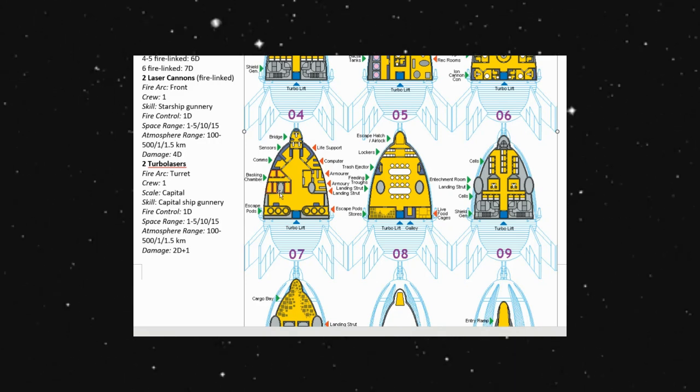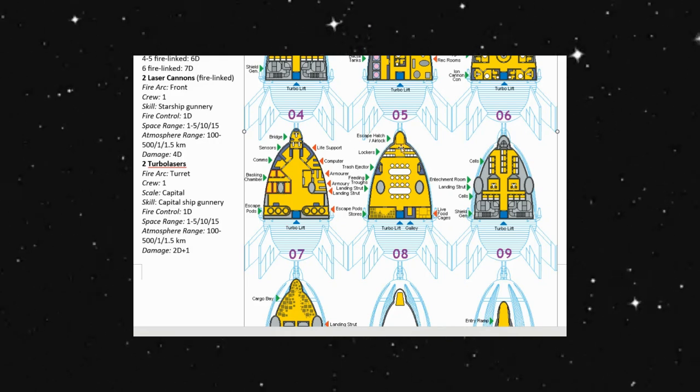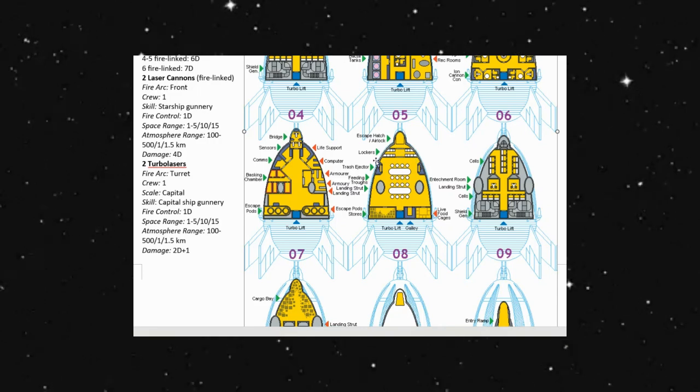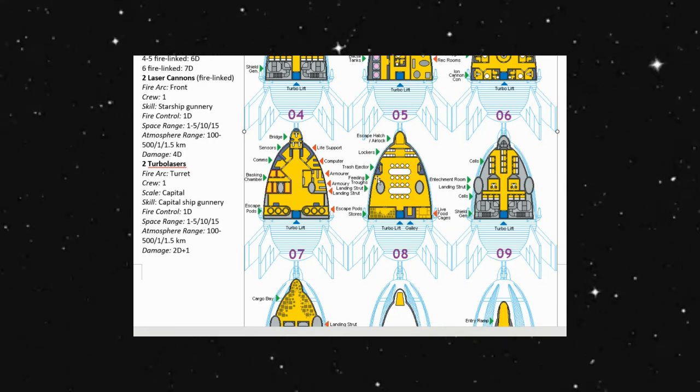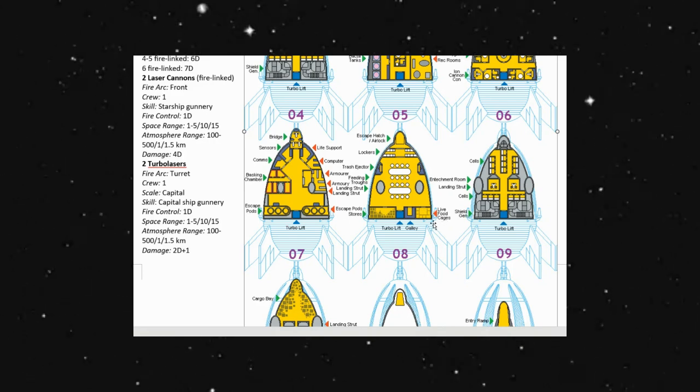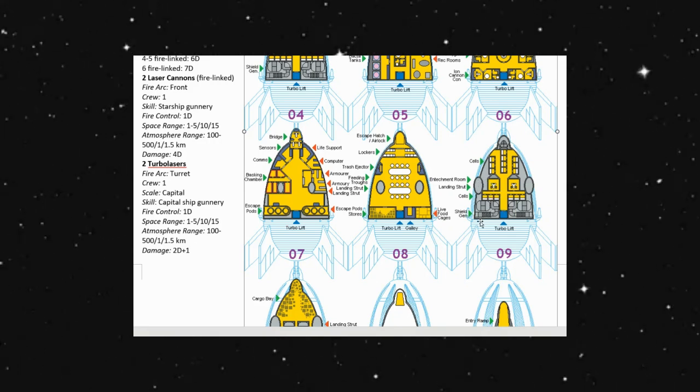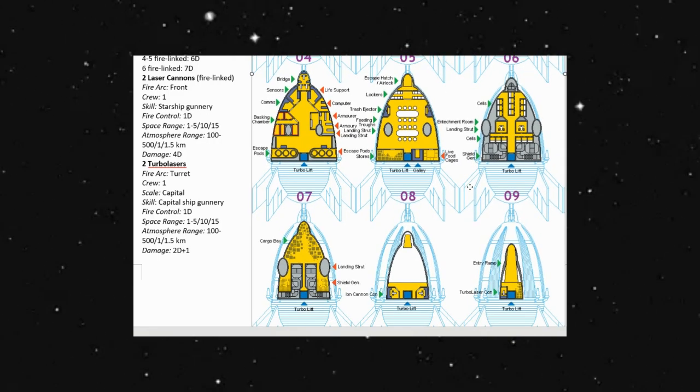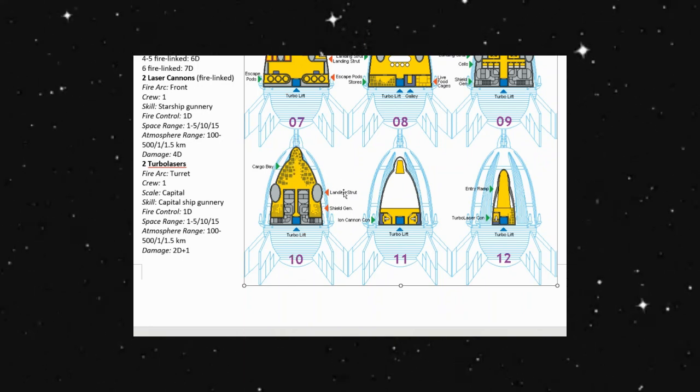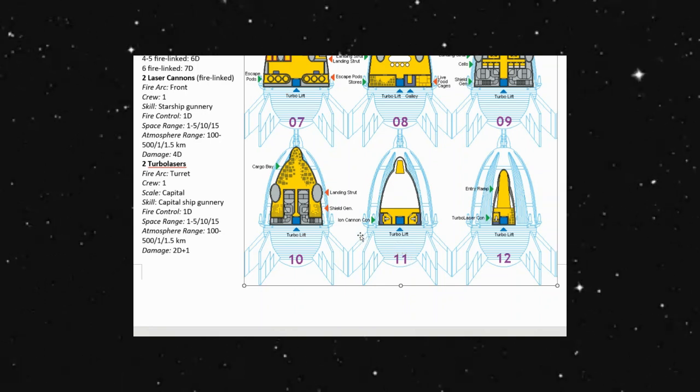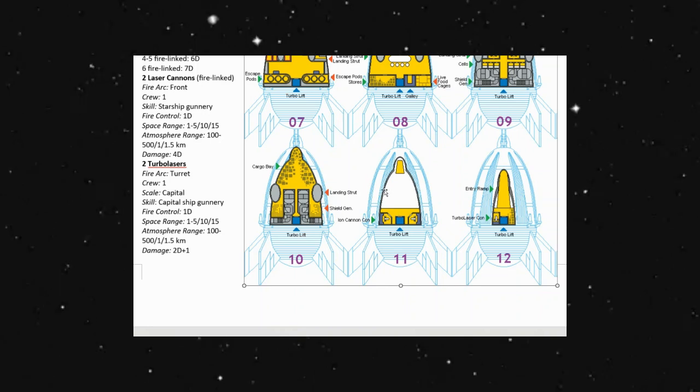We have an escape hatch as well as an airlock. We have some lockers here. Trash ejector, probably on both sides here. Landing strut that's on the outside. We have stores, live food cages. More cells, probably for the other cannons. Landing strut. More cells. Shield generator again. And then we have our cargo bay on level 10. Landing strut. More shield generator. Level 11, we have ion cannon controls. And this is kind of open space, probably for our cargo bay. And then 12, we have an entry ramp and turbolaser control.